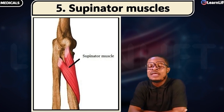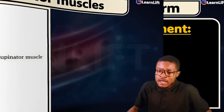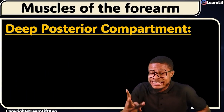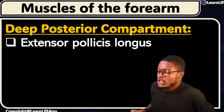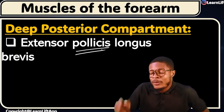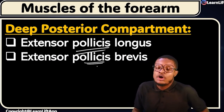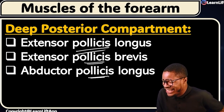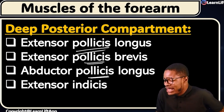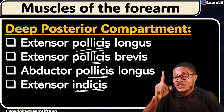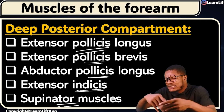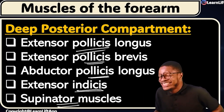Let's recap all five muscles of the deep posterior compartment of the forearm: number one is extensor pollicis longus, number two is extensor pollicis brevis, number three is abductor pollicis longus, number four is extensor indicis, and number five — the last but not the least — is the supinator muscle.